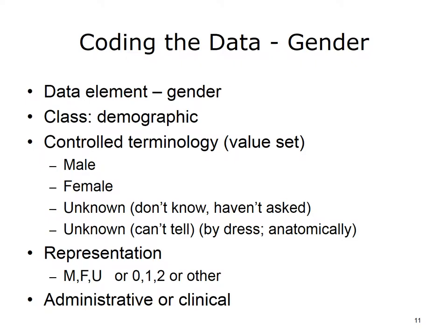Let's take a look at a specific data element — gender — and see how complicated even a simple data element might be. How many values might the answer have? What is administrative gender? What happens if we are talking about clinical gender? How do we distinguish gender if we are talking about X and Y chromosomes? What if we can't determine gender? An obvious answer might be two: male and female. But from a clinical perspective, some terminologies have as many as 27 different values for this term. Several terminologies break gender into administrative gender and clinical gender, with values represented as letters, names, and numbers.